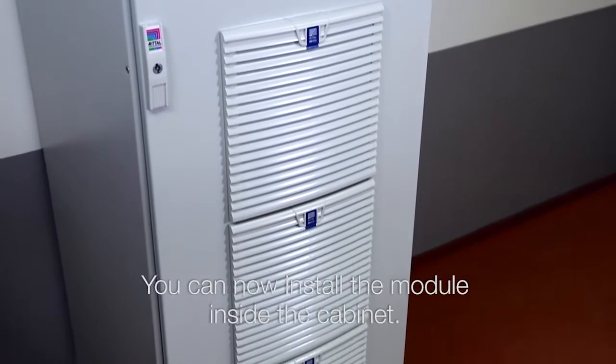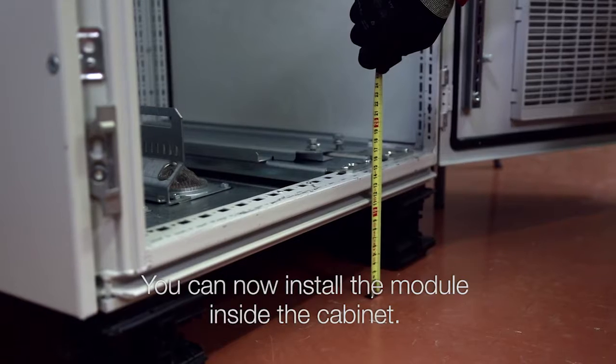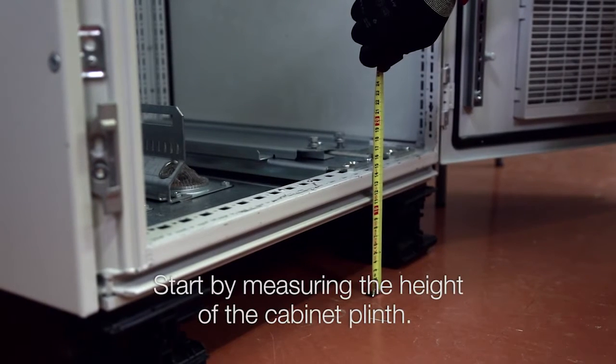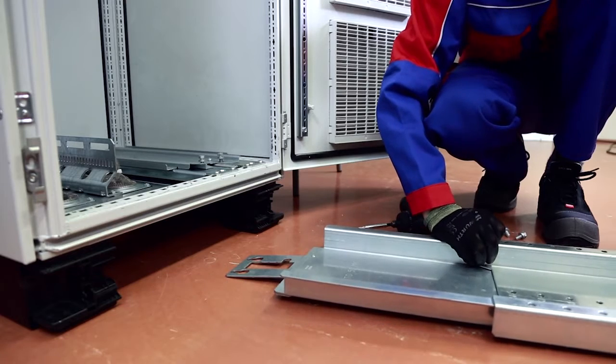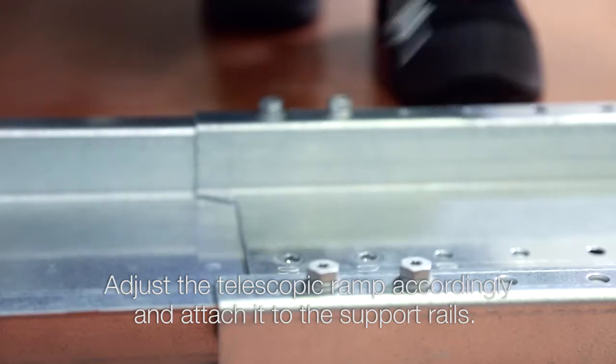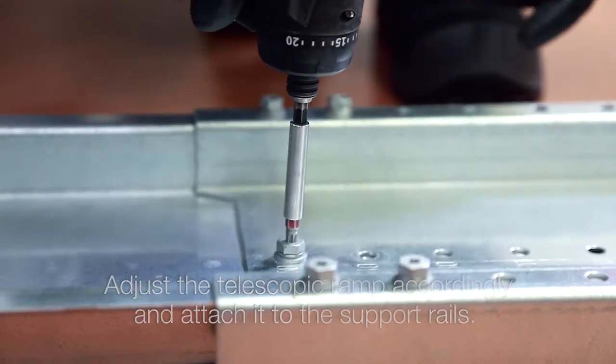You can now install the module inside the cabinet. Start by measuring the height of the cabinet plinth. Adjust the telescopic ramp accordingly and attach it to the support rails.